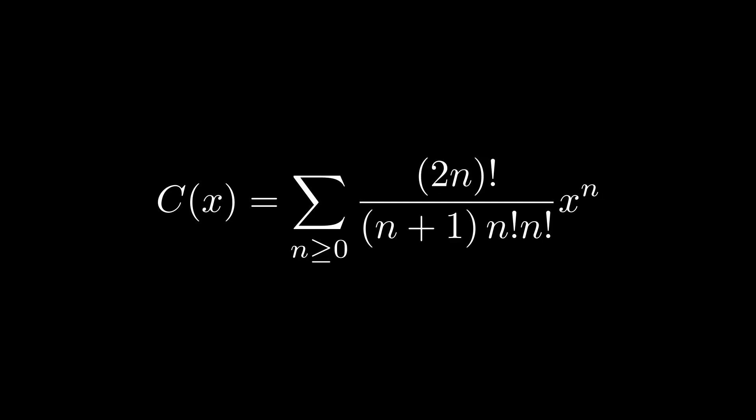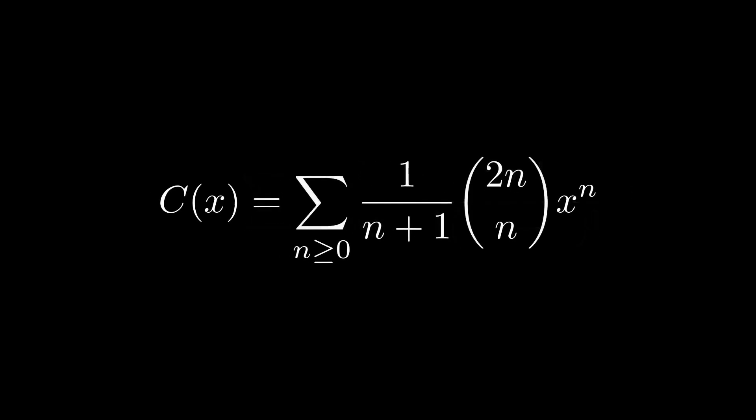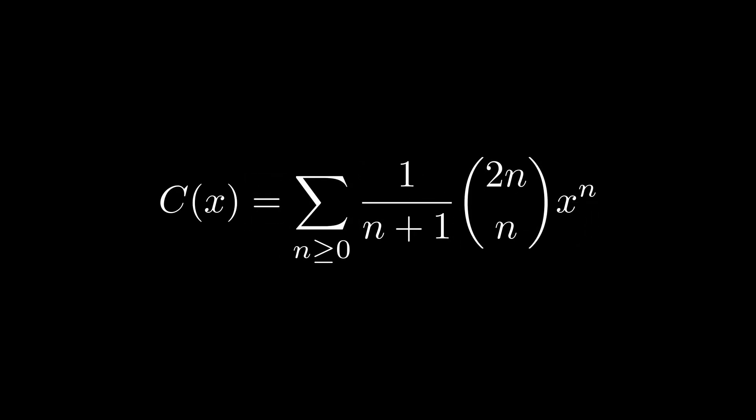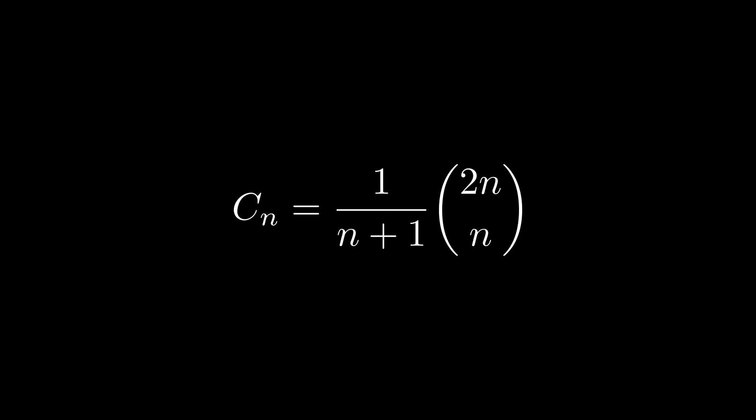And finally, by remarking that n factorial is equal to 2n minus n factorial, we get our binomial coefficient of 2n choose n. Now, since this is exactly our generating function, the coefficient of the nth term of this series is precisely the nth Catalan number, and so we get our desired equality.